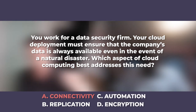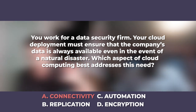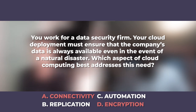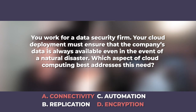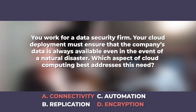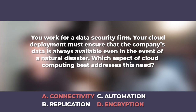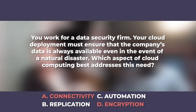Answer choice C is Automation, and D is Encryption. Encryption helps with confidentiality, not availability — so D is out. Automation — for example, automatically assigning session IDs when someone visits your website — is more about process and performance. It doesn't really affect the availability of your data. What we're looking for is an actual deployment model that ensures availability, which is what B — Replication — provides.